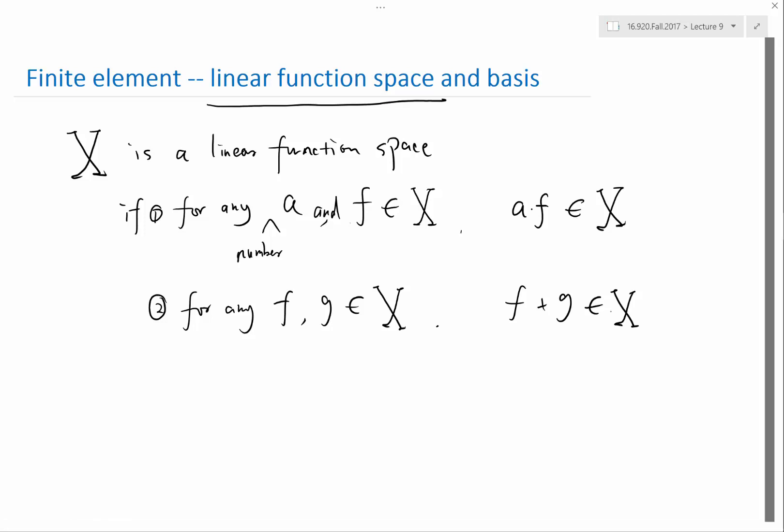And of course, if you go to Wikipedia, look for the definition of a linear space, it also includes other things that are obvious for functions. For example, a times b times f is equal to a times parenthesis b times f. All of these are true by default for a function space, for a space of functions. And for example, f plus g equal to g plus f. These are things that are, for functions, true by default. So this is what a linear space is.